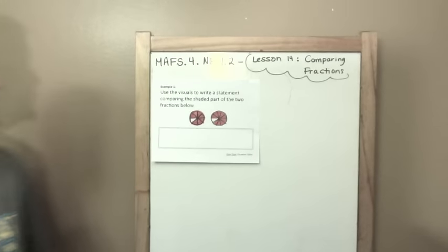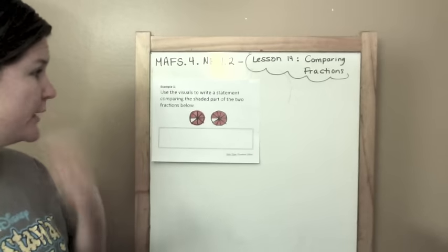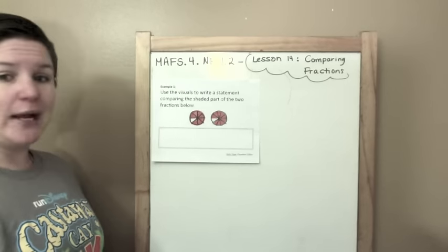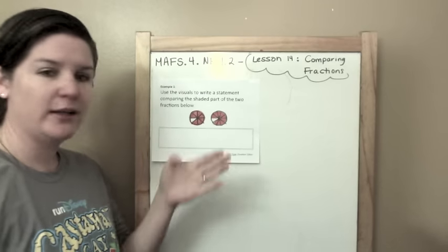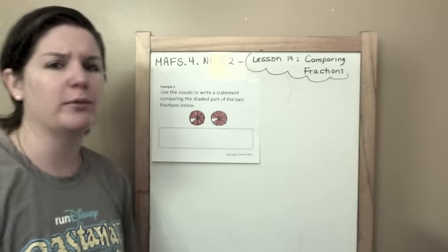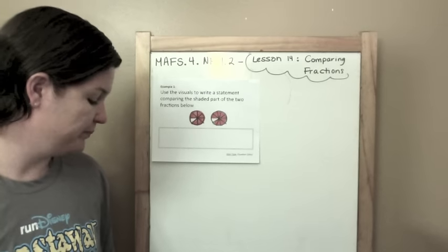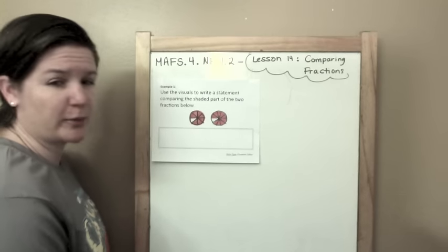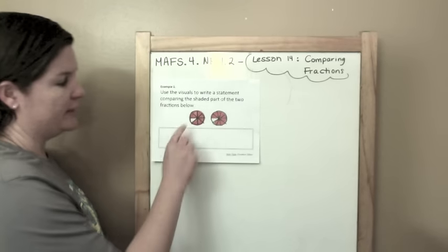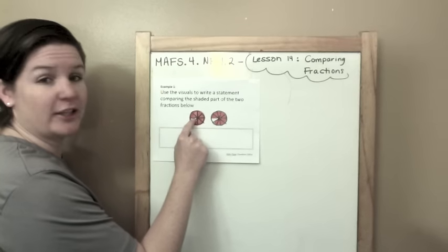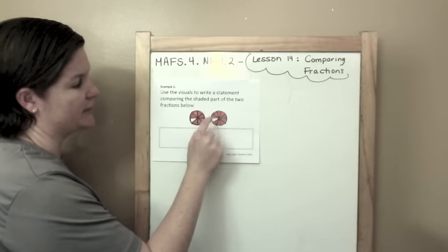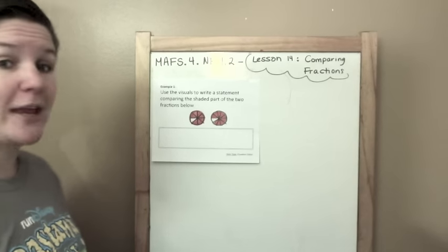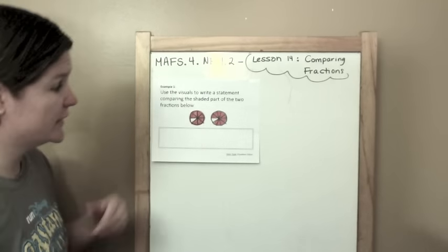Example one: use the visuals to write a statement comparing the shaded part of the two fractions below. I had to draw in these fractions because when it printed, it was kind of hard for you to see on camera. You can see from the visual that this slice looks a little bit bigger than this slice, so this one probably has more shaded in. But I'm going to show you a cool math trick to easily compare them.